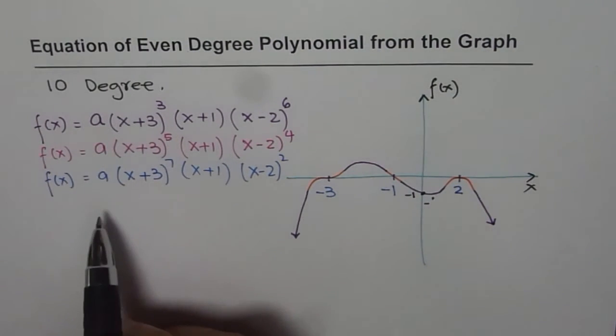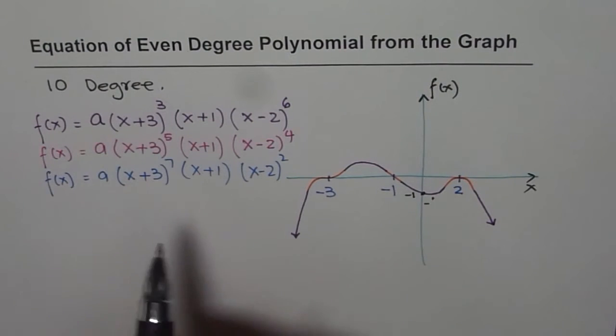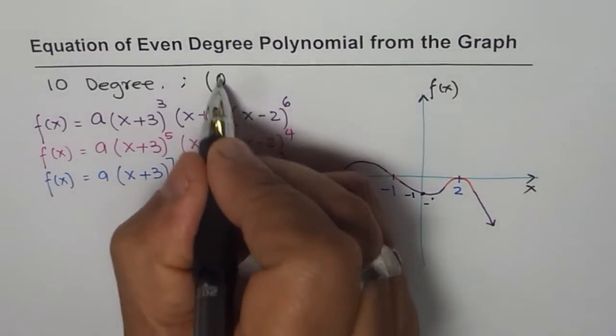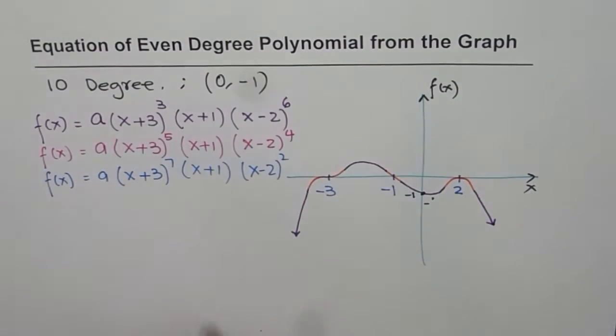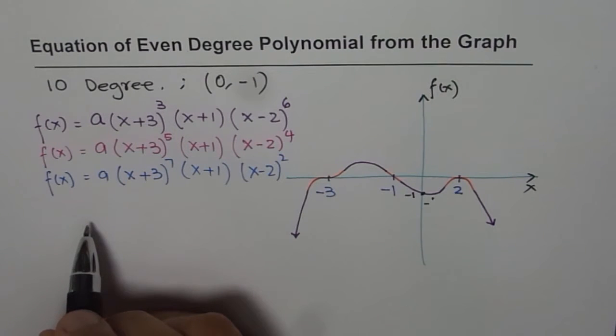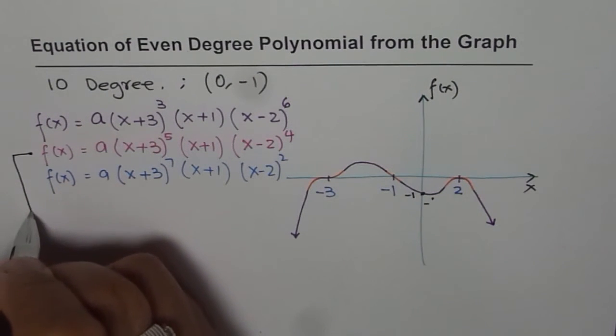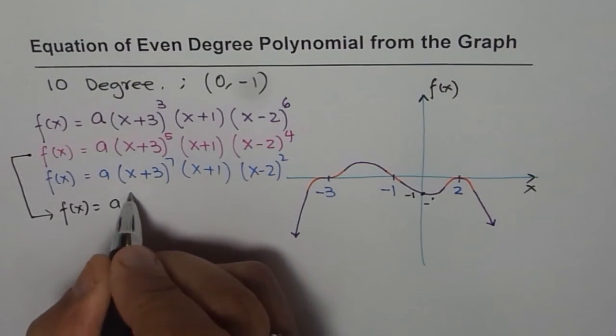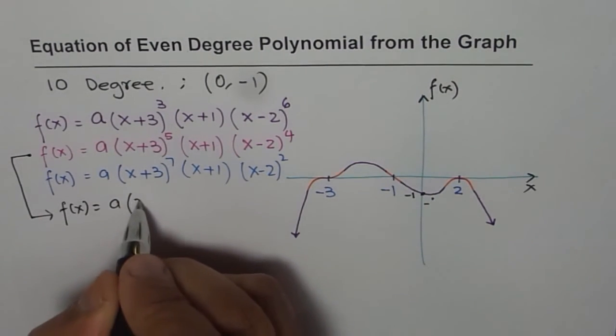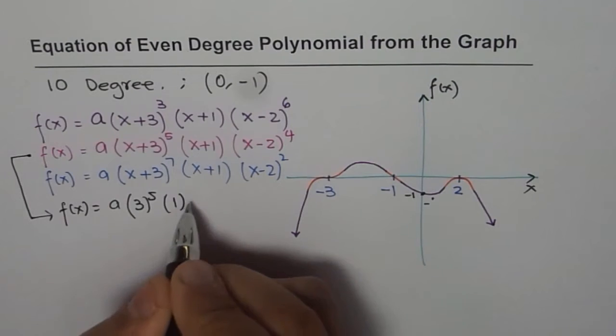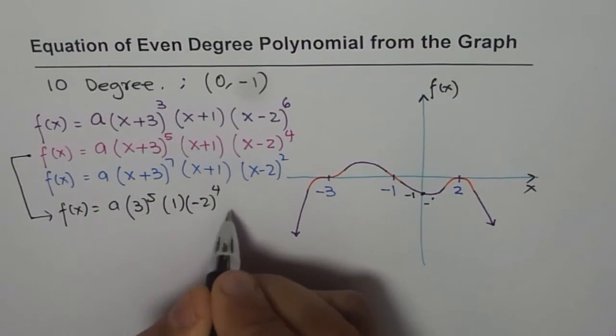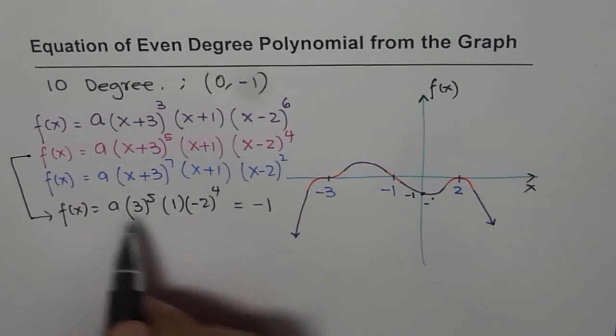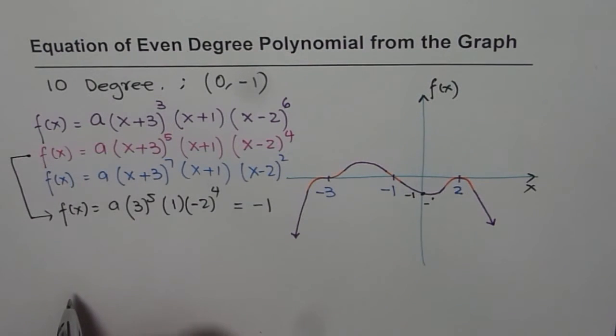So that is the x-axis and this is the function f of x. If I know a point, then we can utilize coordinates of these points to find the value of a. So any of these equations can be written with the point, which is our y-intercept, and we are using y-intercept as 0, minus 1. So let us take which equation? Let me take this equation. So we will now work with f of x equals to a times, and I will take x as 0. That means we have 3 to the power of 5 times 1 times minus 2 to the power of 4. And that should be equal to f of x here is minus 1.